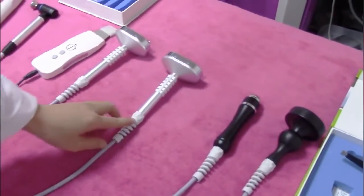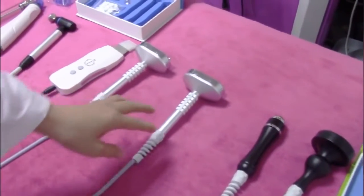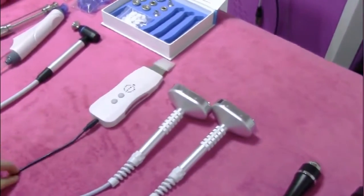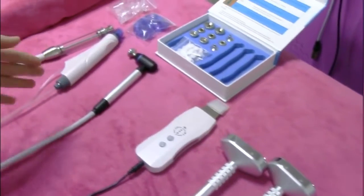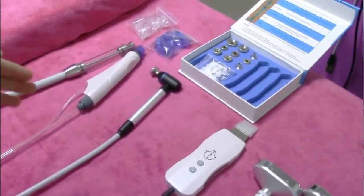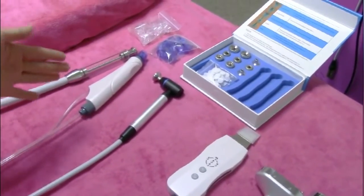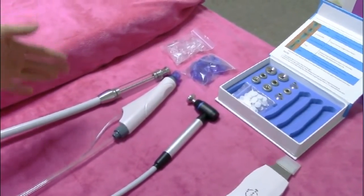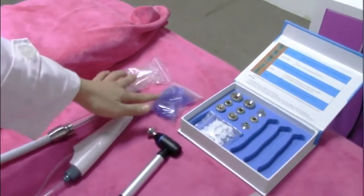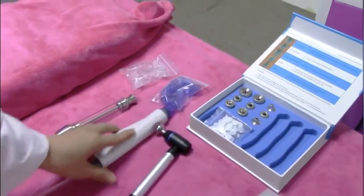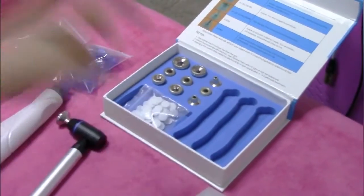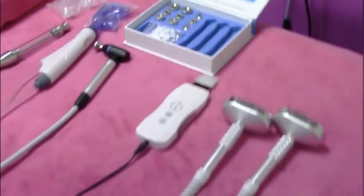And the BIO photoelectric electronic, and the skin scrubber, and oxygen injector. Here we have hydro-dermabrasion handle pieces, micro-dermabrasion handle pieces, and this is the tips for hydro-dermabrasion handles, and this is micro-dermabrasion handle tips.